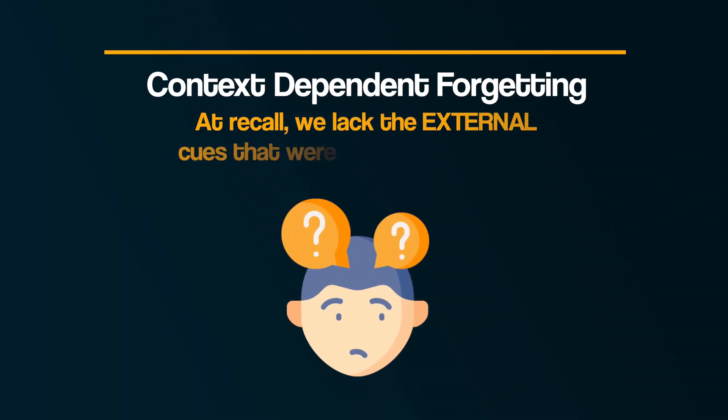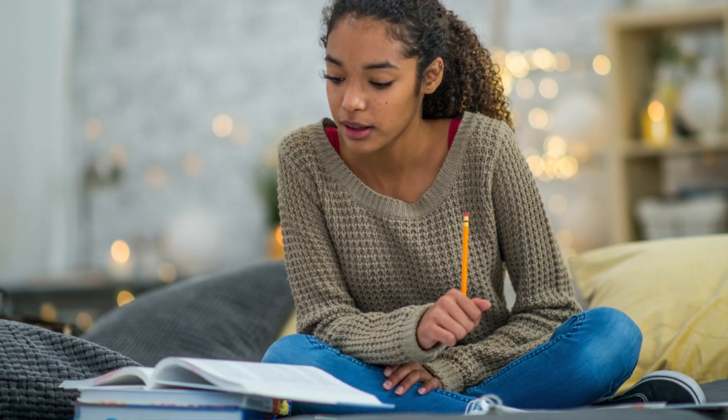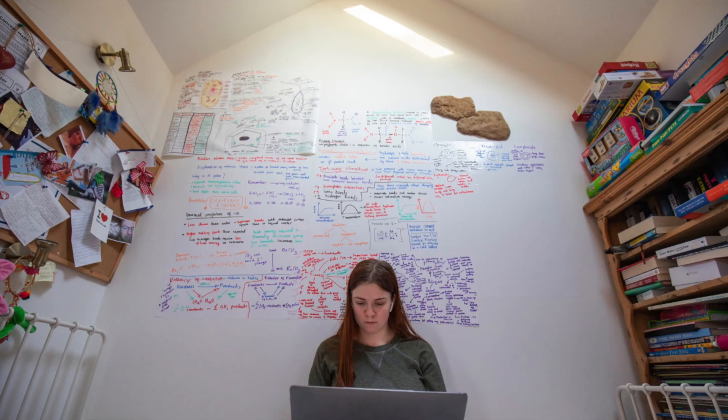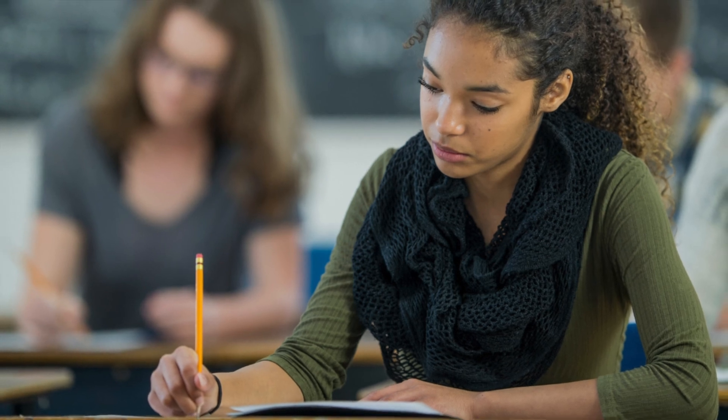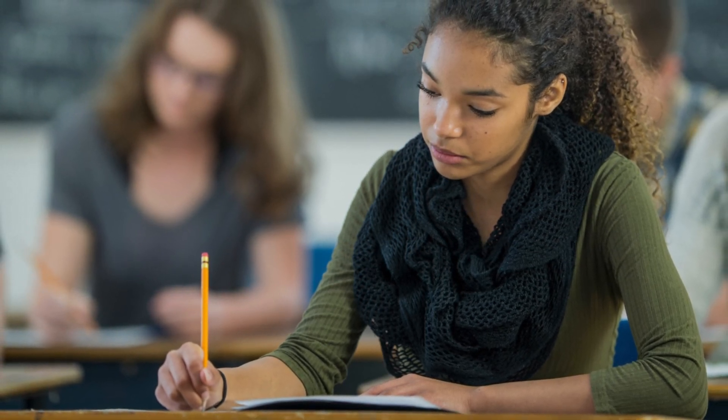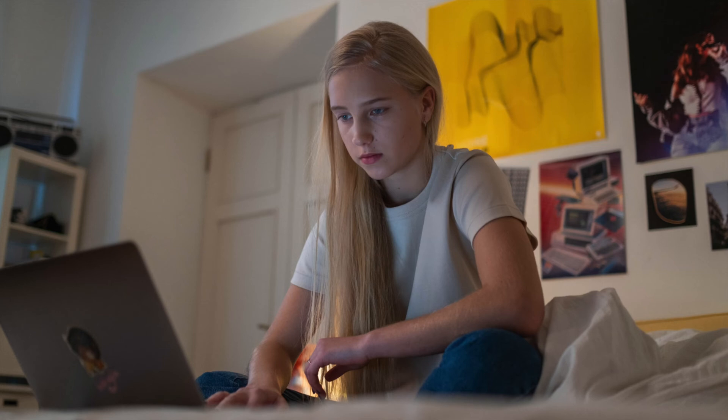Retrieval failure can be broken down into two parts. Firstly, context-dependent forgetting. This focuses on the importance of external cues — that is, cues that are outside of us. If we forget, it's because when we try to recall the memory we lack the external cues that were present at learning. This might be something as simple as the room and place we studied in, but it might also be the headings or layout of material from your notes. So if we're trying to recall a memory but the external contextual cues such as a keyword or heading are missing, or perhaps you're simply trying to recall the information in a different location from where you encoded it, we can fail to retrieve the memory.